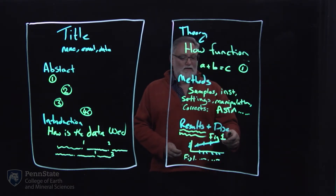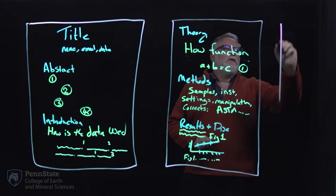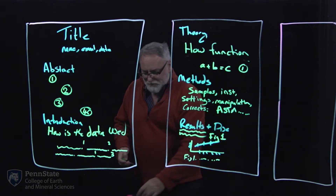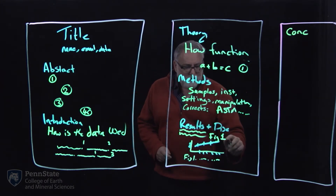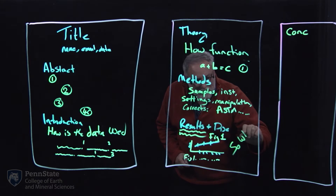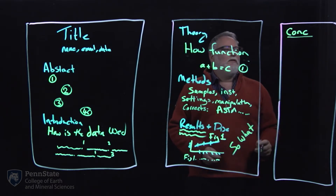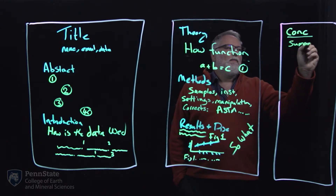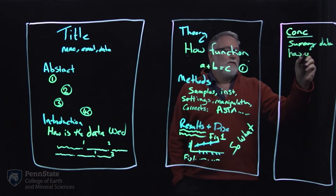How you communicate your information is partially how you're judged. You are also going to have a conclusion section. With the data, you're going to explain how that data is used. The conclusion is a summary of the data and recommendations, showing how you have used that data.